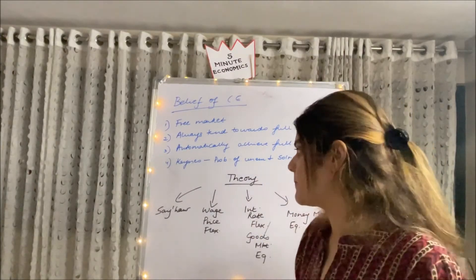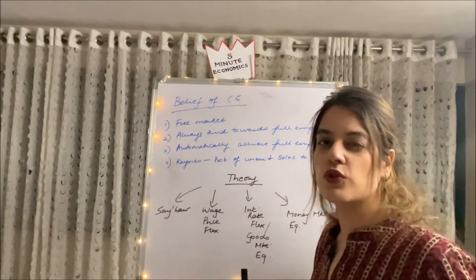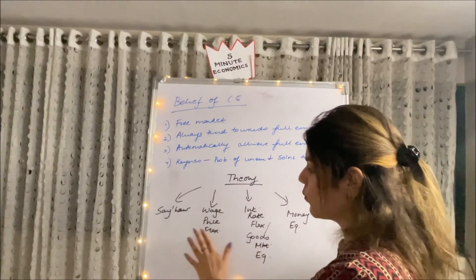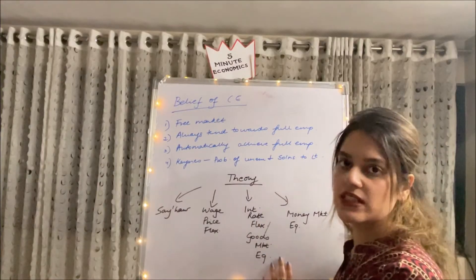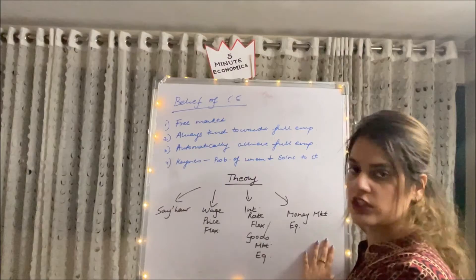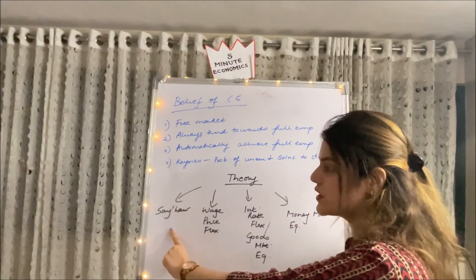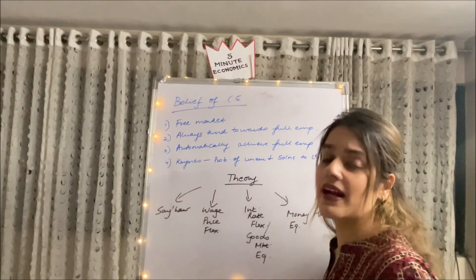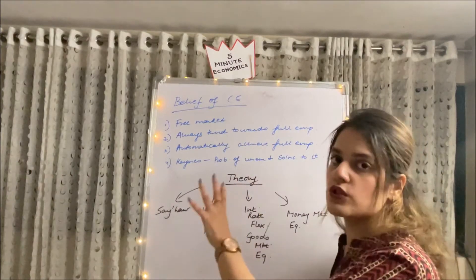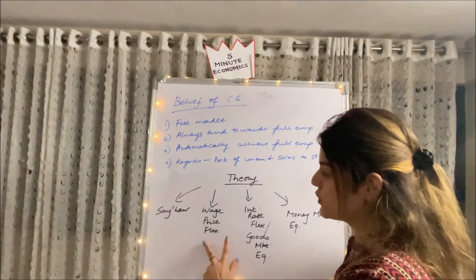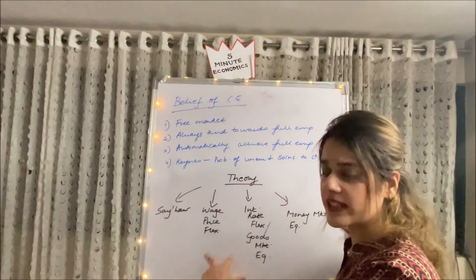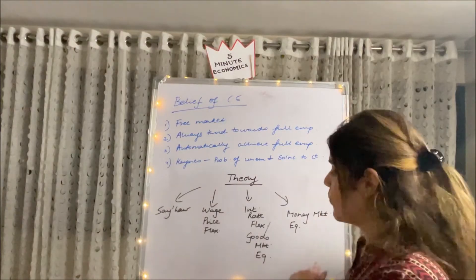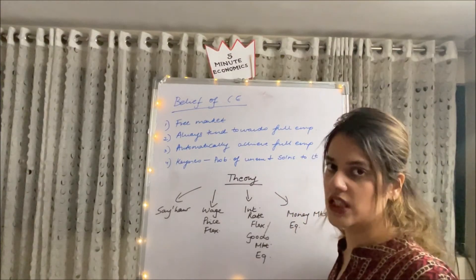I've divided the classical theory into four parts: Say's Law, the wage-price flexibility model, the interest rate flexibility model (also known as goods market equilibrium), and money market equilibrium. I've made a separate video on Say's Law, so I won't repeat it here — the link will be in the comment section. I've also made a detailed video on the quantity theory of money, which covers the money market equilibrium in depth.